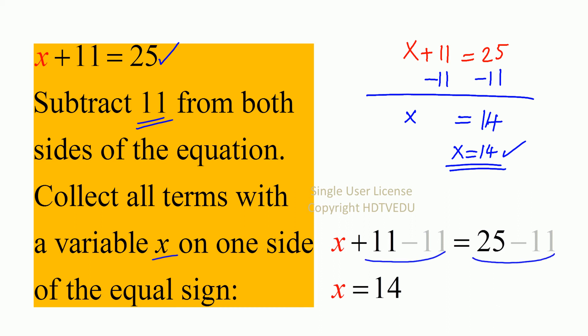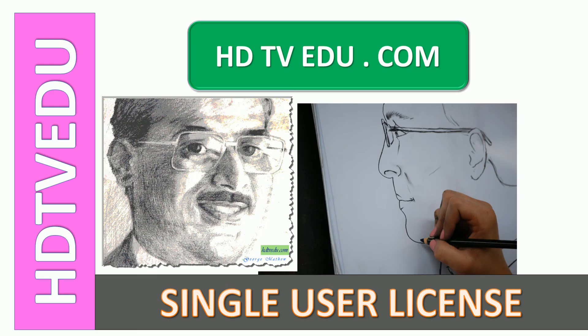11 minus 11 is 0, so what do we get on the left side? x. And what is on the right side? 14. x is equal to 14. And this is George Matthew signing off. Good luck.